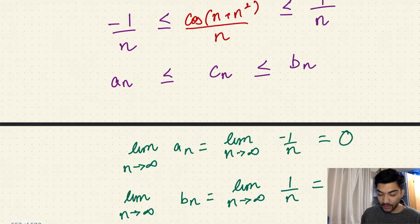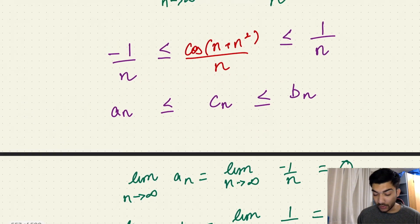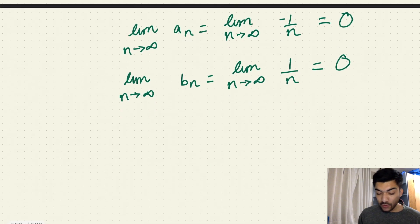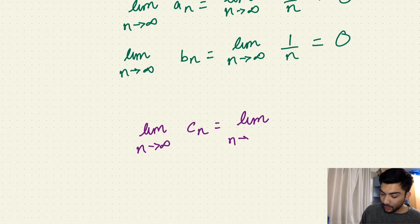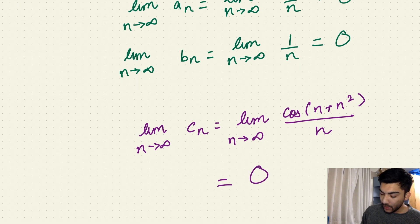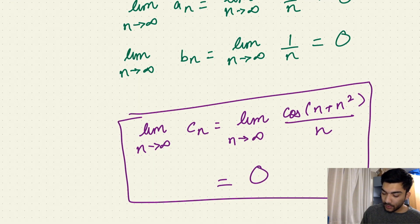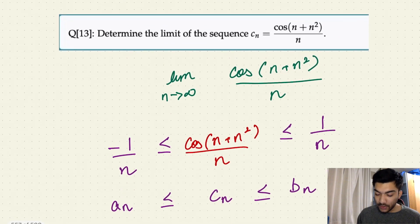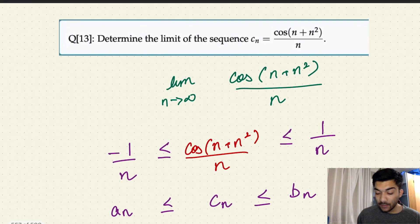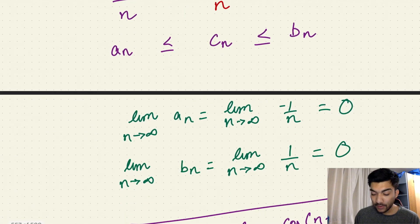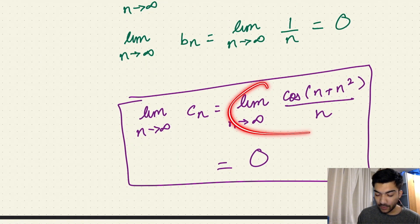Since both of these sequences are equal to zero and this inequality holds true as well, by squeeze theorem, also known as sandwich theorem, we can easily conclude that the limit as n tends to infinity for c(n), which is the limit as n tends to infinity for cos of n plus n squared upon n, is equal to zero. We didn't calculate it by directly taking the limit — rather, we used the squeeze theorem to calculate the exact value of this limit.